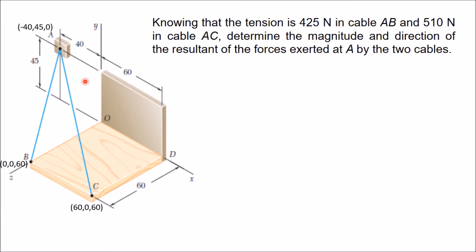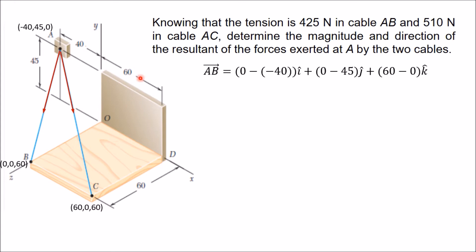Once we have the coordinates of these three points, we know that tension in a cable always acts in the direction of the cable and away from the point. Since we are considering point A, forces act away from A — that is, towards B and towards C. Vector AB is calculated as coordinates of B minus coordinates of A: (0−(−40), 0−45, 60−0), which gives 40i − 45j + 60k.